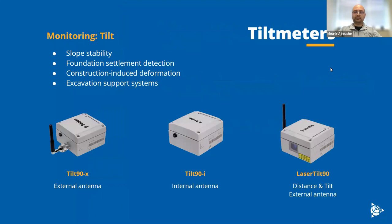We also have tiltmeters. Tiltmeters are geotechnical sensors used to measure the angular deviation of a surface from a vertical or horizontal plane. We can find bi-axial or tri-axial tiltmeters, and some can measure distance using laser sensors to detect settlement. There are three different types of tilt sensors: the laser tilt, the 90X, and the Tilt-90i, which is more vibration resistant and mostly used in rail monitoring applications.